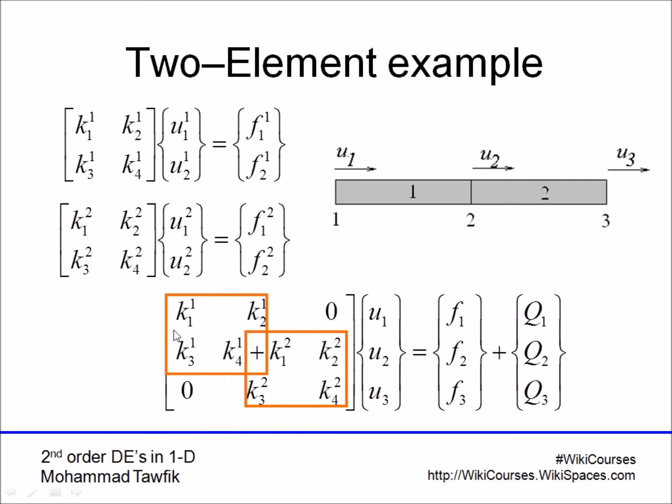In the three-by-three global matrix, we put the first element in the first place—this square—then augmented it by adding the second element starting at the second u. This corresponds to u₁, this to u₂, and this to u₃.